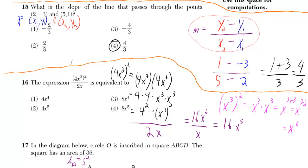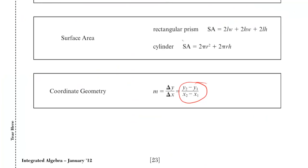We have to use the formula for slope, which is given to you, by the way, in the reference sheet: y2 minus y1 over x2 minus x1.